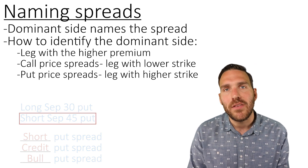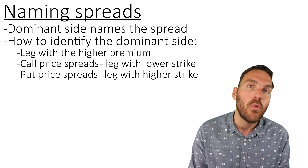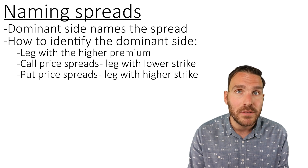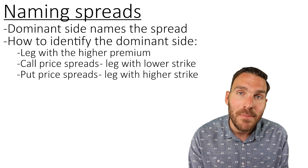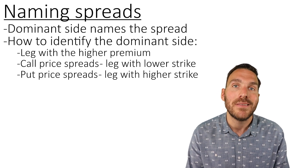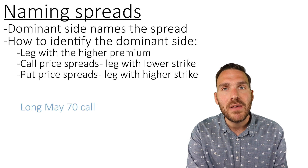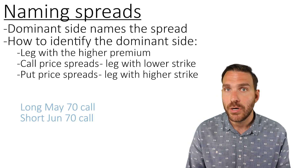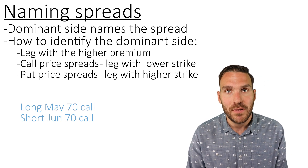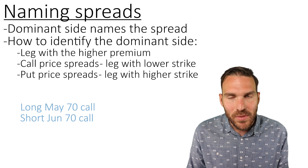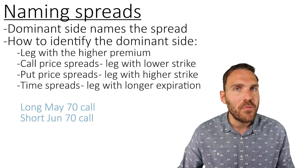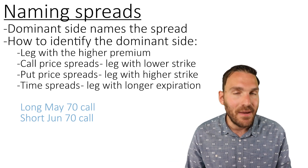The last type of spread you can be asked to name is a horizontal, time, or calendar spread — all meaning the same thing. That's where we have the same strike prices but different expirations. The way we determine the dominant side with a calendar spread is by finding which option will last longer. Whatever option lasts longer is our dominant side every time.